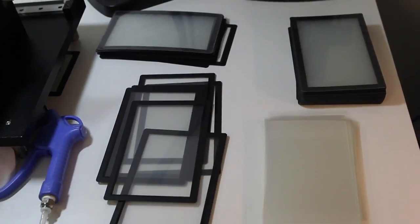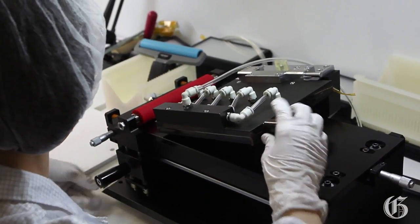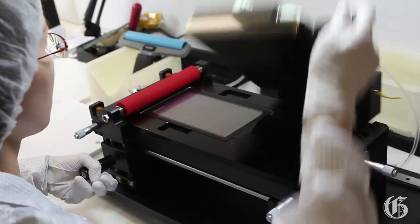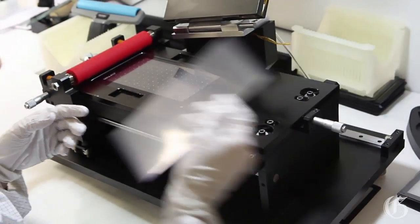Followed by laminating an optically clear adhesive on the glasses. Then top sheet bonding is performed in order to finish the assembly.